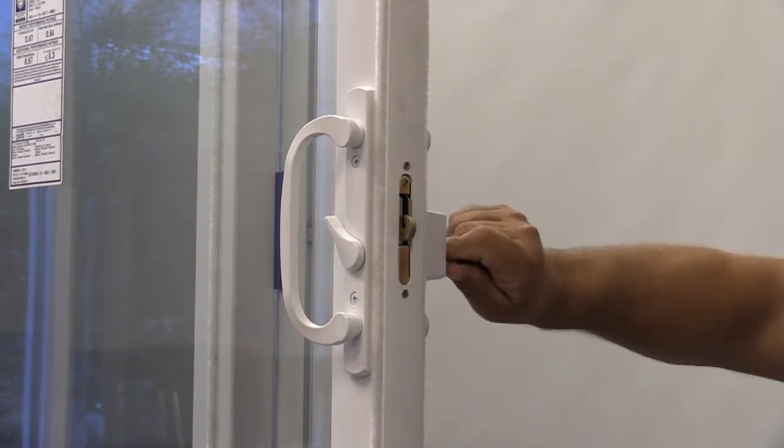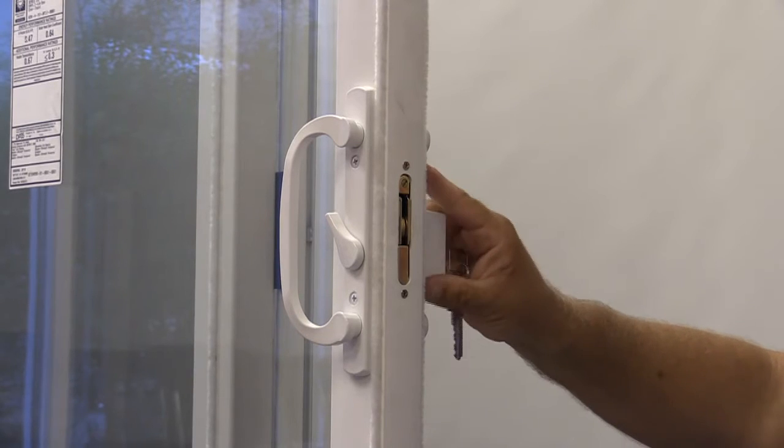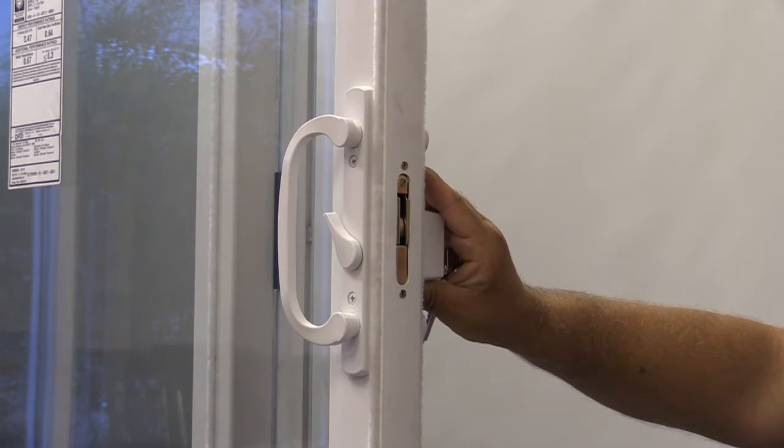Sometimes a key can get stuck in the lock. This is caused by the tumbler not being in the right location. However, this is a simple fix.